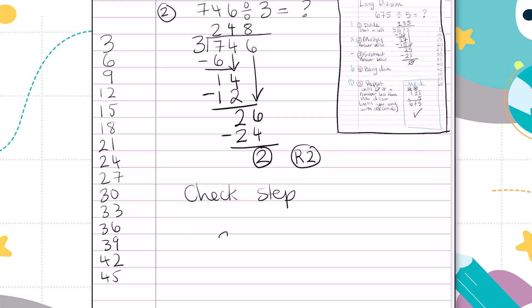Now we're going to do a check step to make sure that our answer is accurate. So I'm going to take my quotient, 248. And I'm going to multiply it by the divisor, which is 3. 3 times 8 is 24. 3 times 4 is 12, plus 2 more is 14. 3 times 2 is 6, plus 1 more is 7. That gives us 744.